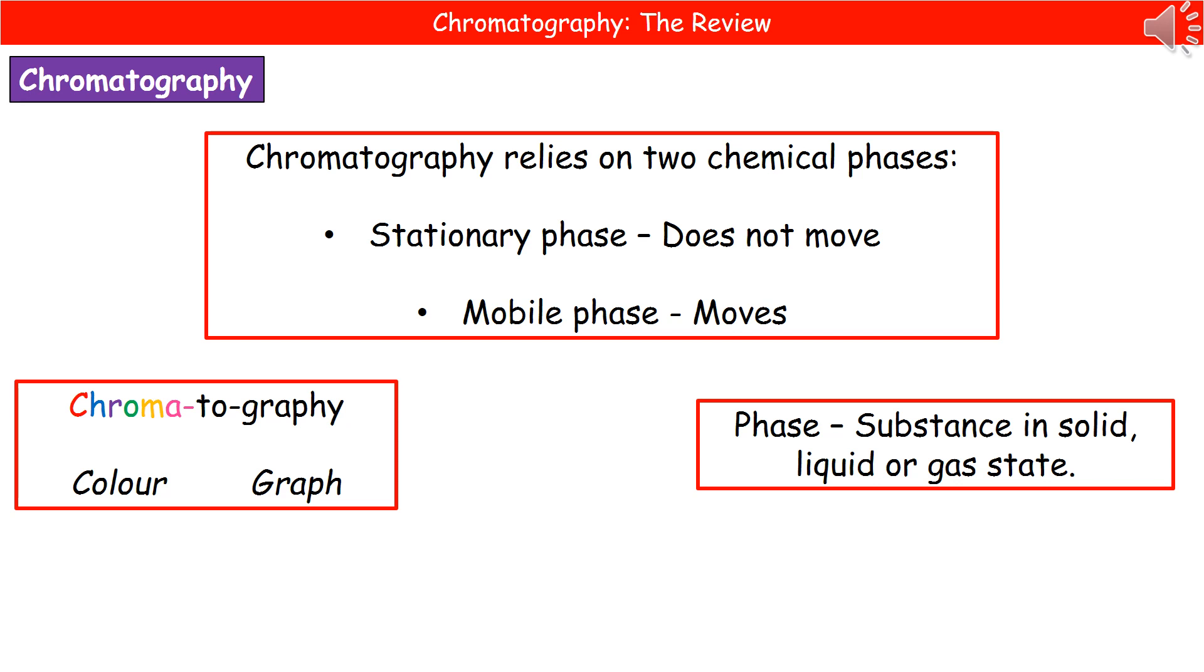If you break the word down, chroma just means colour, and the graphy bit is referring to a graph. So basically it's giving us a colour graph. This is a way of actually separating out chemicals into an easy to interpret system.